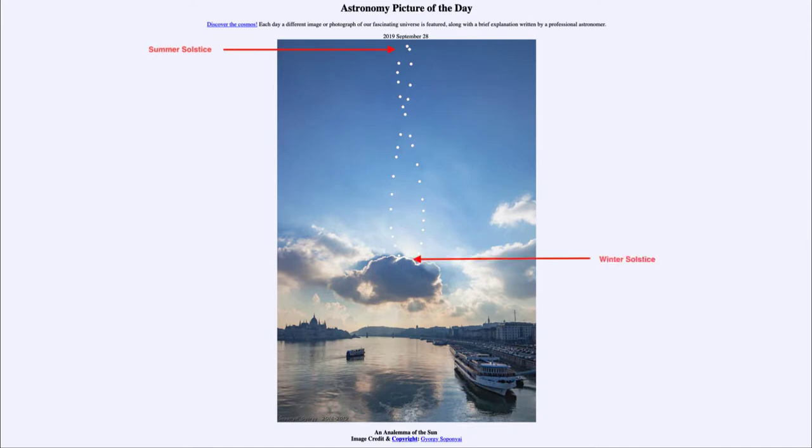At the winter solstice, the sun would be at its lowest point in the sky and therefore it would be at the bottom of the figure eight here. And at the equinoxes, the sun would be in the middle of this.